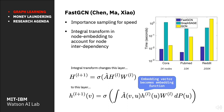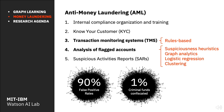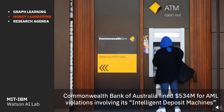Finance presents some interesting use cases, and today I want to motivate the problem of anti-money laundering. At a high level, money laundering is simply the concealment of criminal money flows via layered transfers involving multiple banks and/or legal businesses. Anti-money laundering, on the flip side, is a regulatory requirement. Unfortunately, without the billions of dollars spent on AML, the bad guys are still winning — Europol estimates that only one percent of criminal proceeds are actually confiscated today.